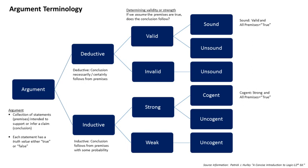There are several kinds of arguments in logic, the best known of which are deductive and inductive. An argument has one or more premises but only one conclusion. Each premise and the conclusion are truth-bearers or truth candidates, each capable of being either true or false, but not both. These truth values bear on the terminology used with arguments.